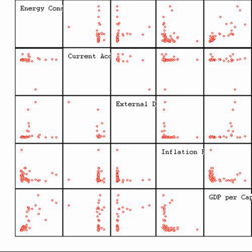The modern field of statistics emerged in the late 19th and early 20th century in three stages. The first wave, at the turn of the century, was led by the work of Francis Galton and Carl Pearson, who transformed statistics into a rigorous mathematical discipline used for analysis not just in science, but in industry and politics as well. Galton's contributions included introducing the concepts of standard deviation, correlation, regression analysis, and their application to the study of human characteristics such as height, weight, and eyelash length. Pearson developed the Pearson product-moment correlation coefficient, the method of moments for the fitting of distributions to samples, and the Pearson distribution, among many other things.